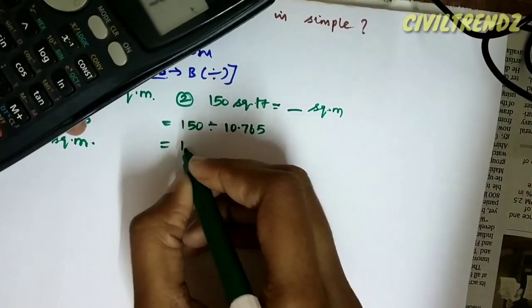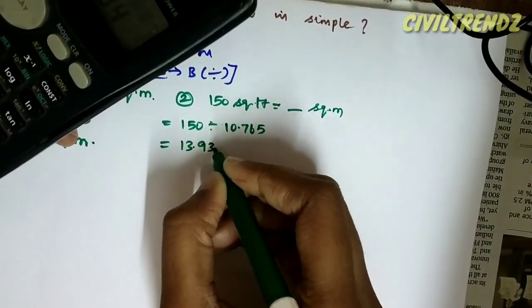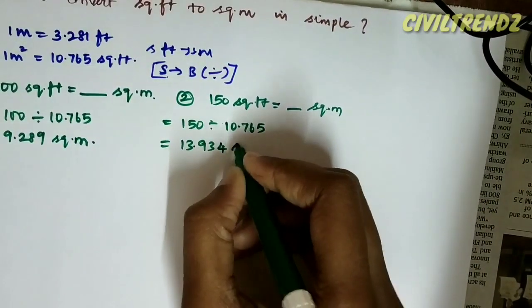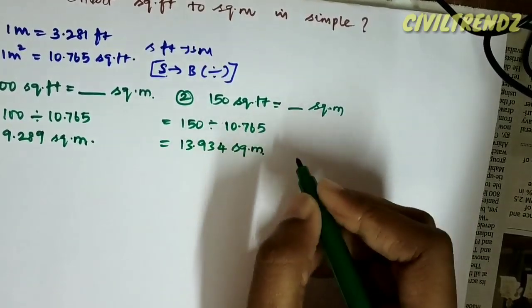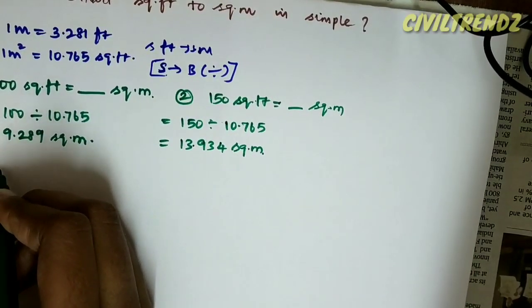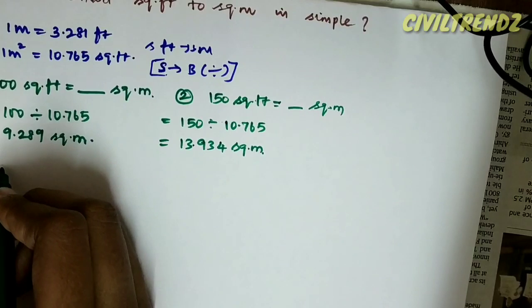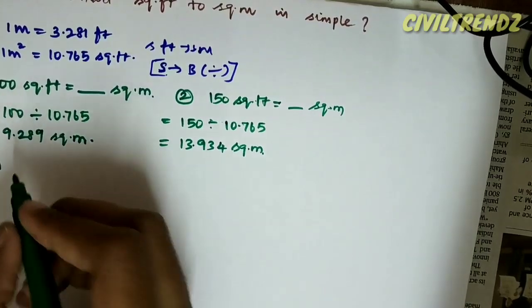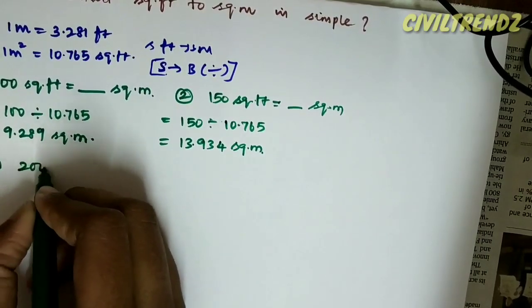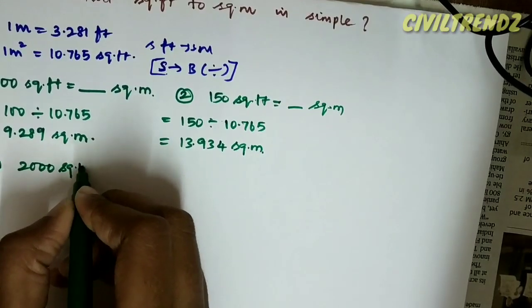150 divided by 10.765 equals 13.934 square meter.